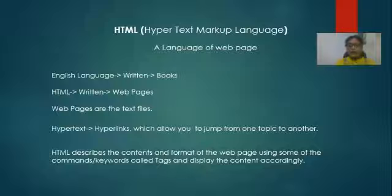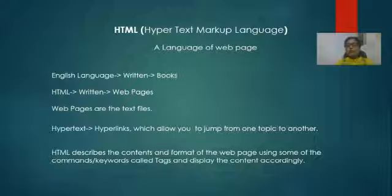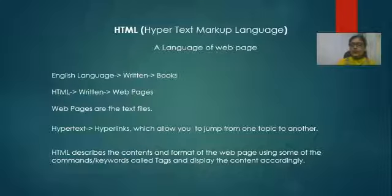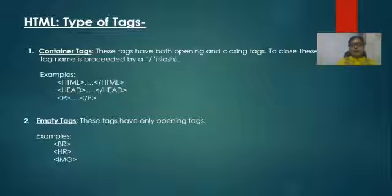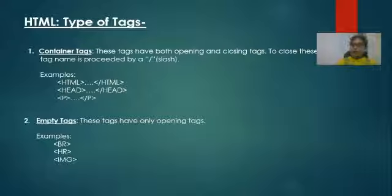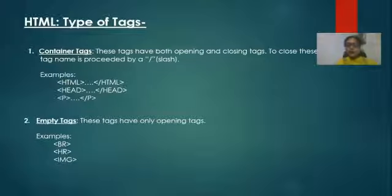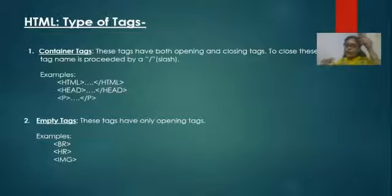These commands and keywords are known as tags. HTML displays the tag content accordingly as it is written. Now, there are two types of tags in HTML. The first one is the container tag. Container tags are those which have both an opening as well as a closing tag.